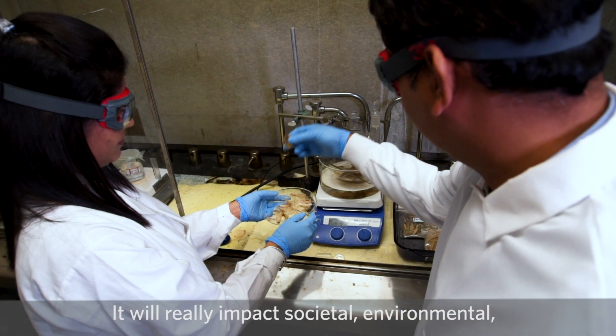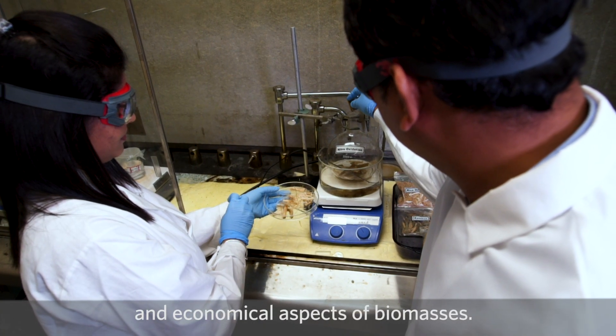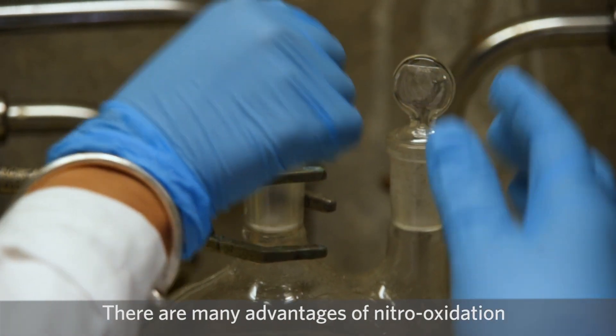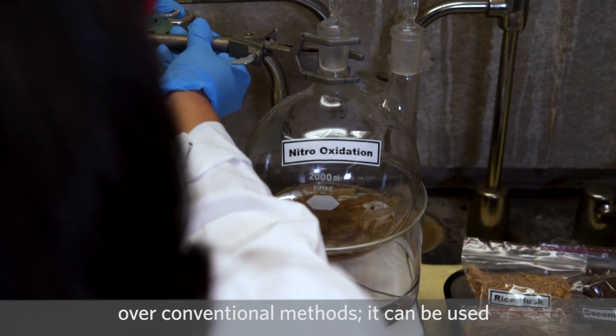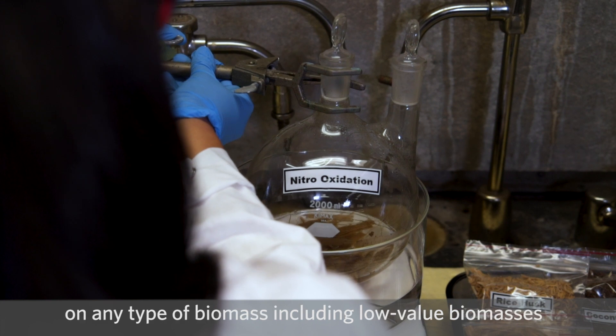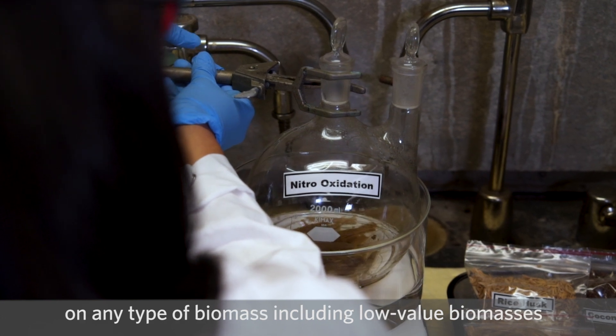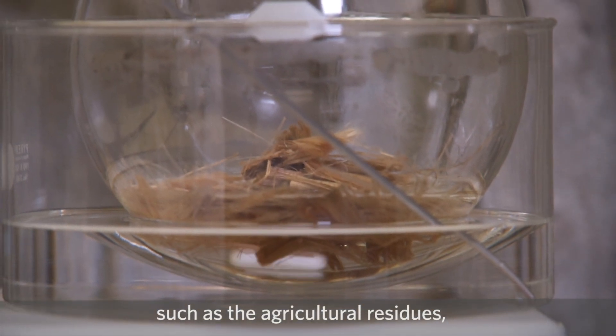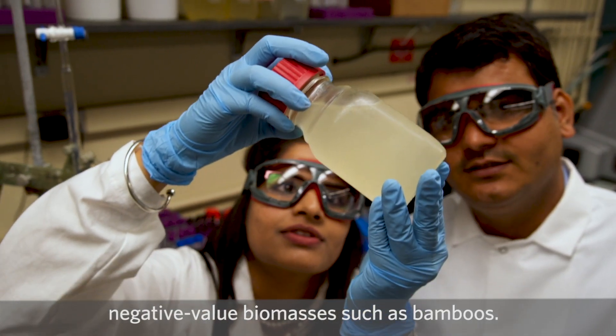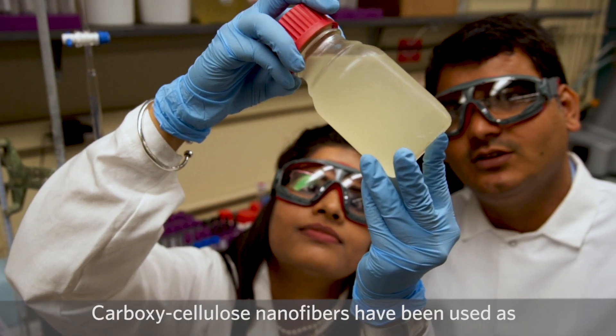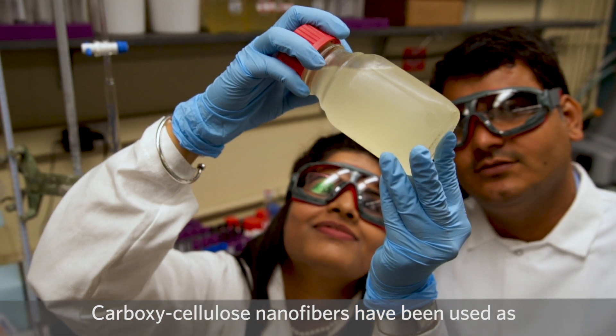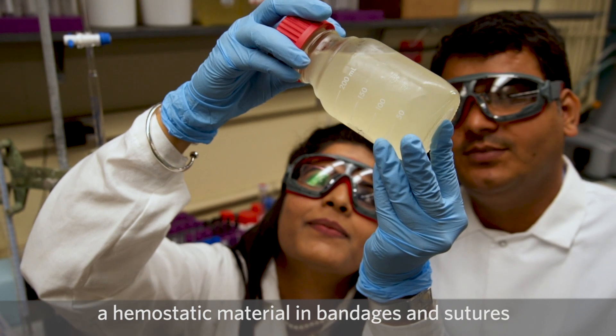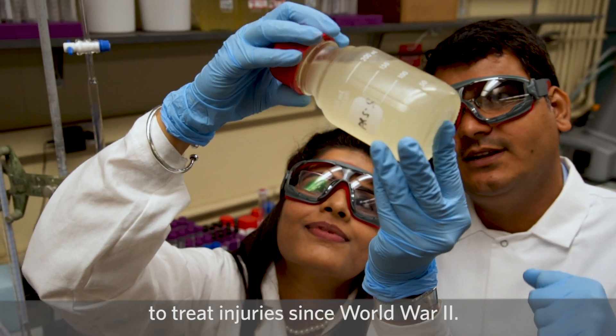It will really impact the societal, environmental, and economical aspects of biomass. There are many advantages of nitro oxidation over conventional methods. It can be used on any type of biomass, including low-value biomass such as agricultural residues and negative-value biomass such as bamboos. Carboxycellulose nanofibers have been used as hemostatic materials in bandages and sutures to treat injuries since World War II.